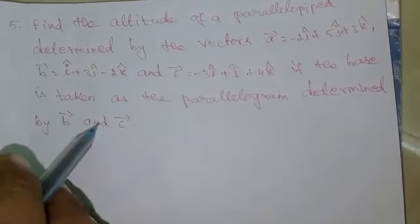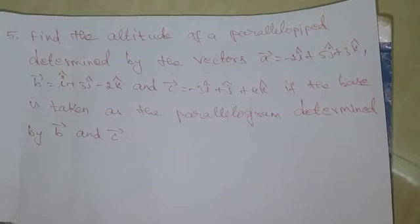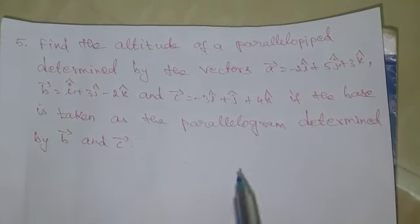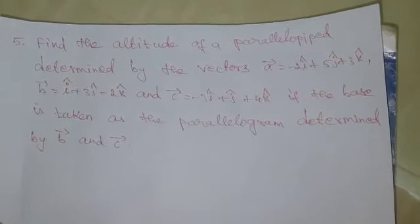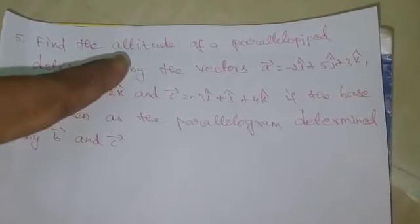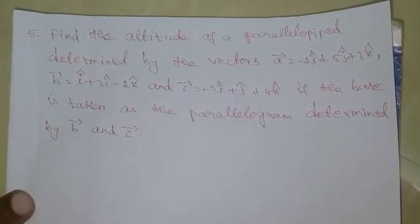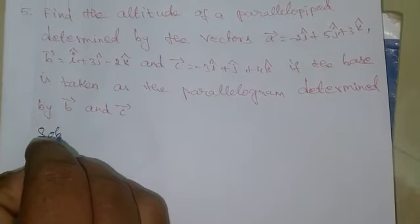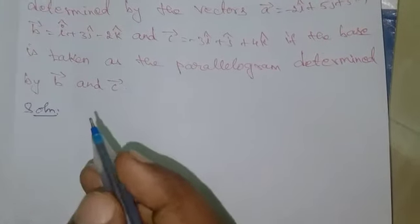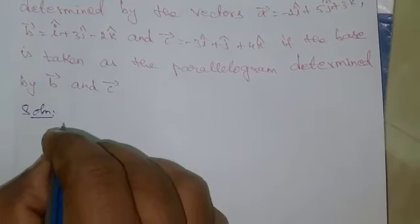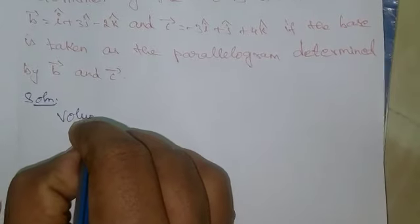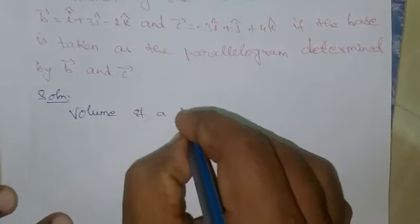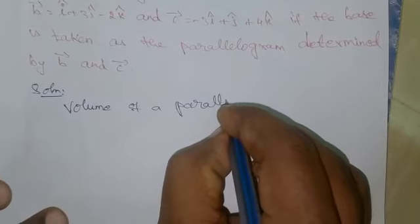We have to find the volume of the parallelepiped and the base area of the parallelogram. The altitude can be found by dividing the volume by the base area. First, we have to find the volume of the parallelepiped.